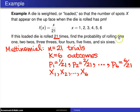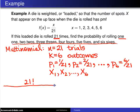The probability of rolling one 1, two 2's, three 3's, four 4's, five 5's, and six 6's, you can just go to the multinomial distribution and this will be 21 factorial divided by 1 factorial, 2 factorial, 3 factorial, 4 factorial, 5 factorial, 6 factorial.